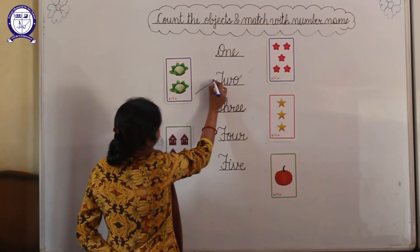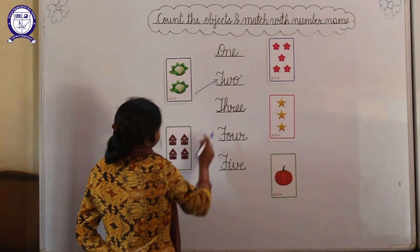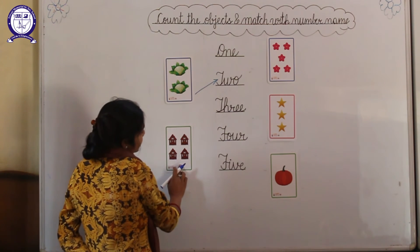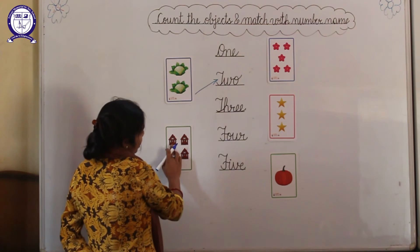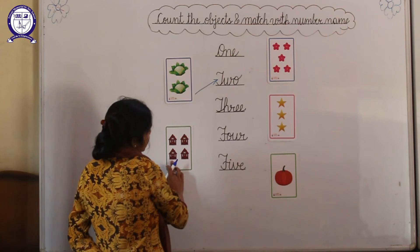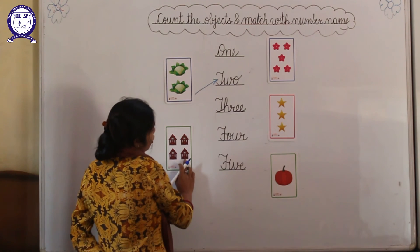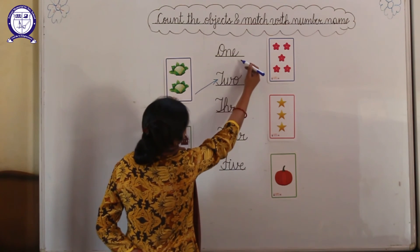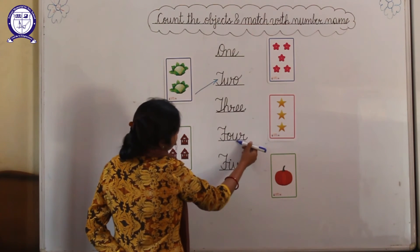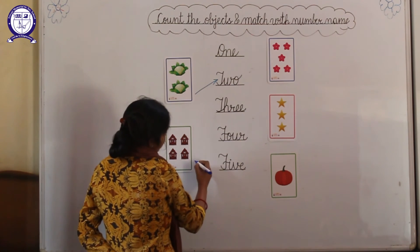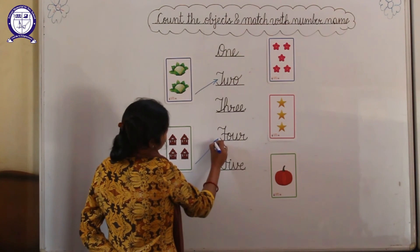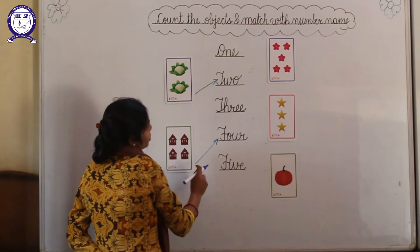And next beta, how many hearts are there? 1, 2, 3, 4. And where is the spelling of 4? Here. And match with 4.